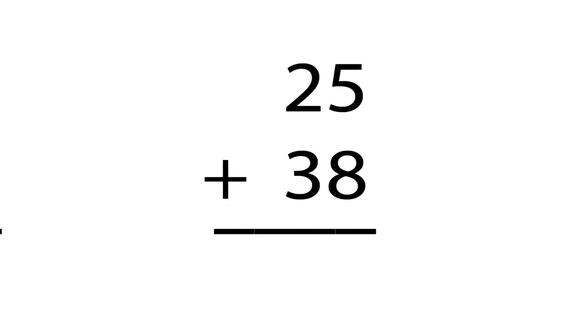Here we have 25 plus 38. Just like before, we need to start adding in the ones column. What is 5 plus 8? 5 plus 8 is 13. Good job. Now just like we learned before, 13 is a two-digit number, so we put the 3 down in the ones column and carry the 1 in the tens column to be added next.